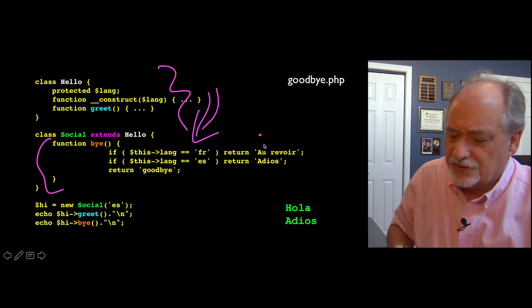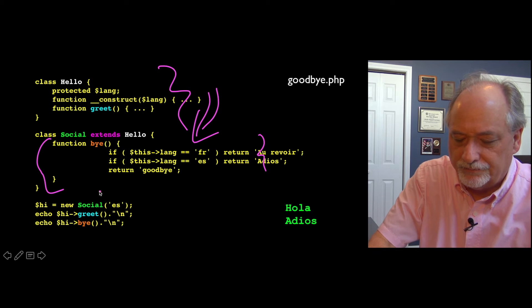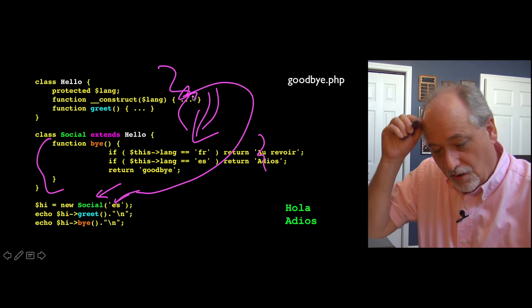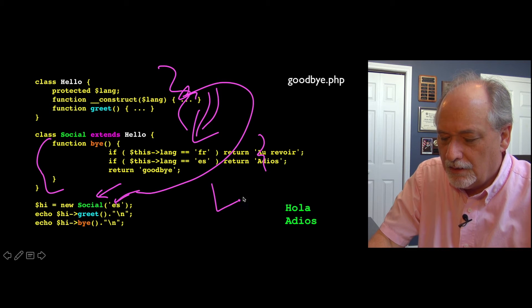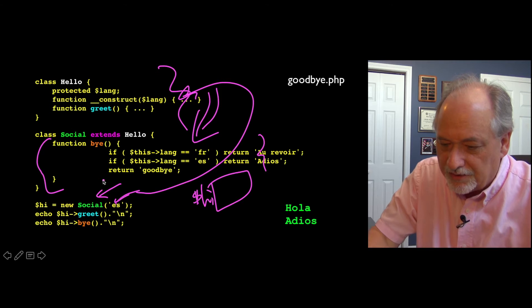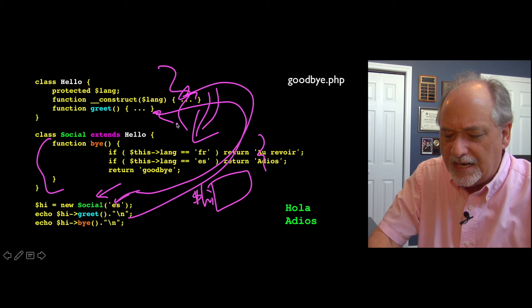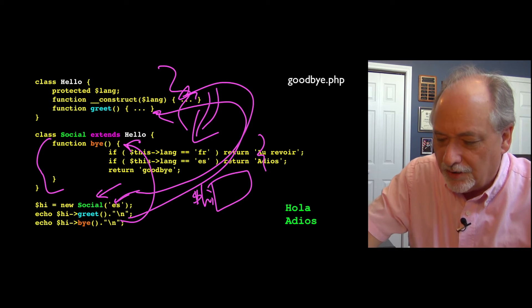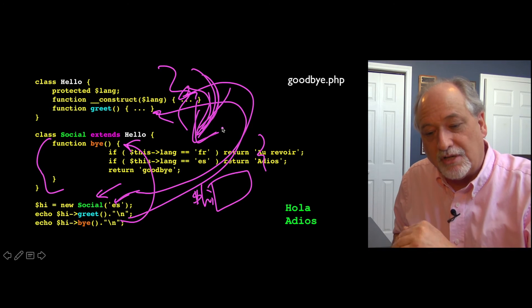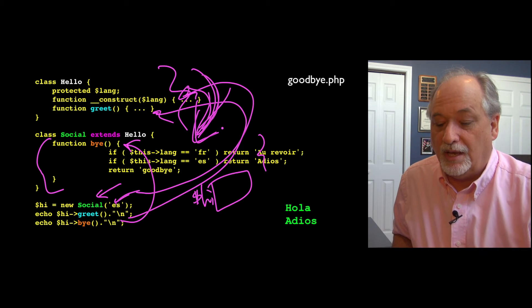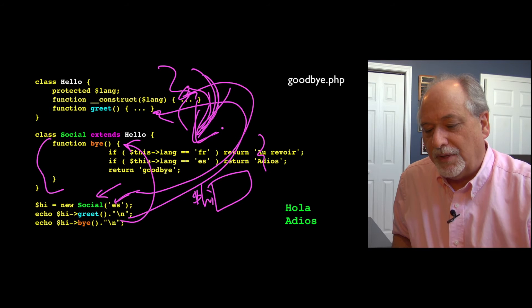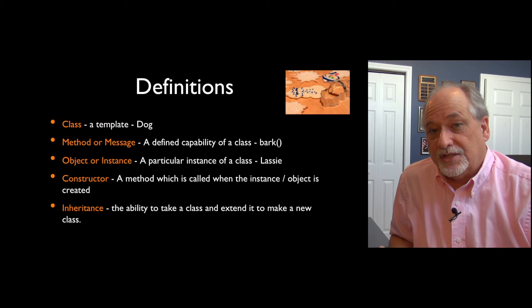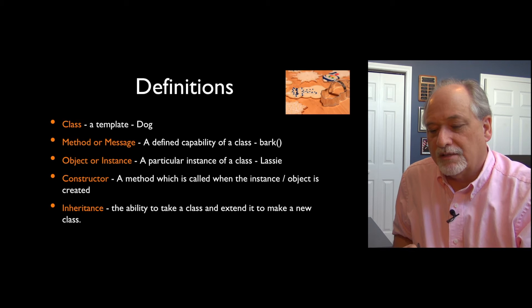This is the logic for the function bye. Now we can create a new Social passing in 'es', which is really calling the constructor inherited from Hello. We've got a hi variable, and it's got a greet method — that greet method has been inherited from Hello. And then we have a bye method, which is the part we added in the Social class. You could still make a Hello object or a Social object. Hello didn't stop existing. We just copied it and extended it. Inheritance is the ability to take a class and extend it to make a brand new class without harming the first class.